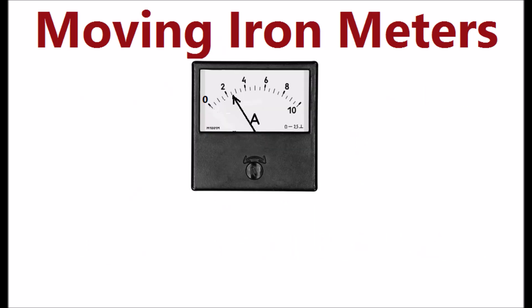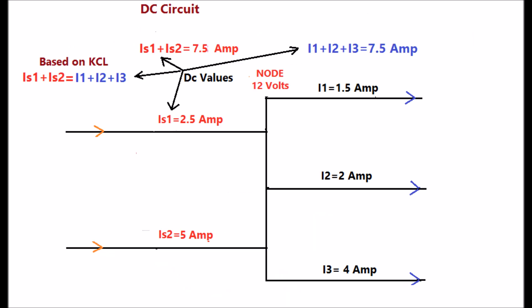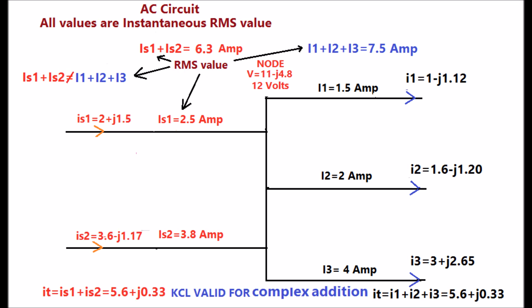Moving ion meters are used for the demonstration. Capital letters are representing the DC value or magnitude of the root mean square RMS value of AC.